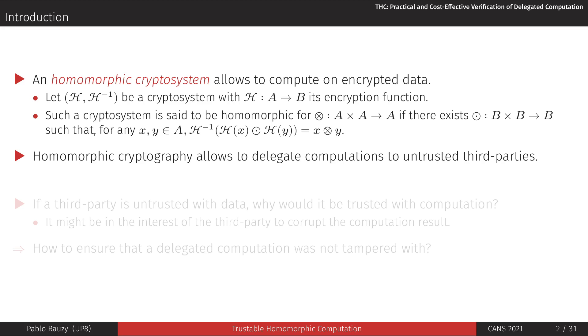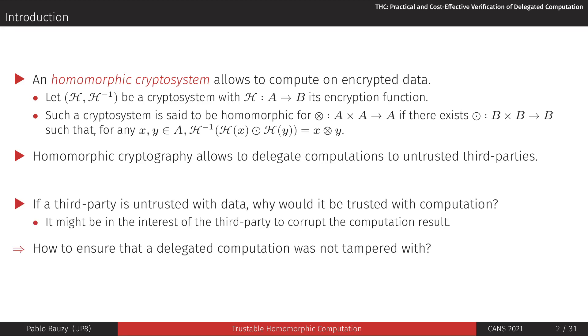This mechanism allows delegating computation to untrusted third parties like cloud providers. A natural question is then: if you need to encrypt your data because you don't trust the third party, why would you trust it with the computation?